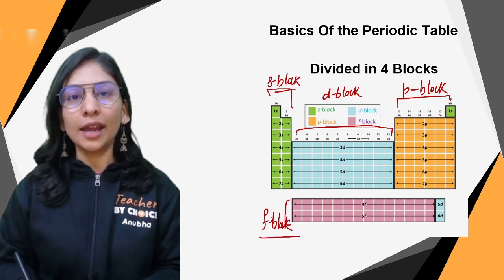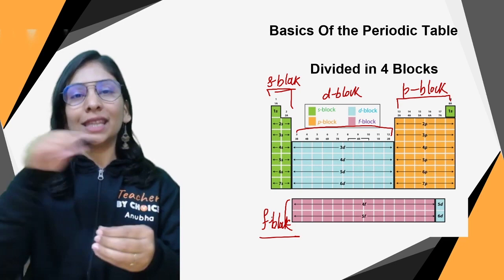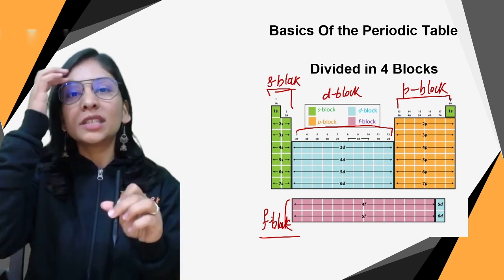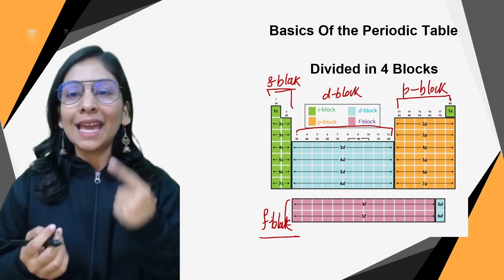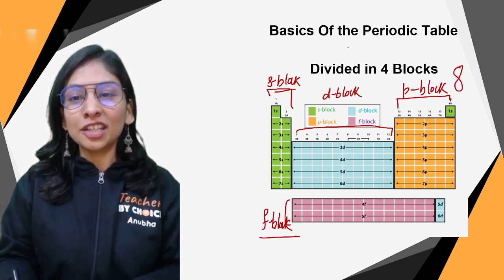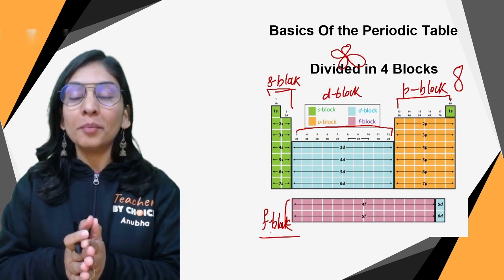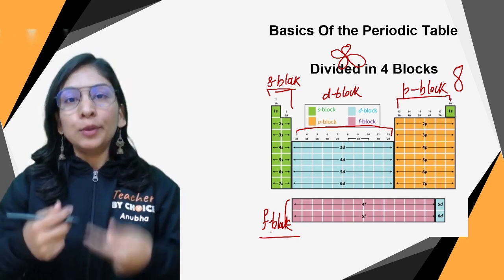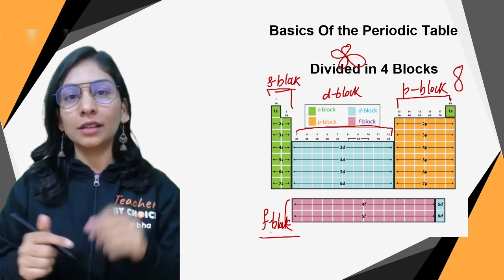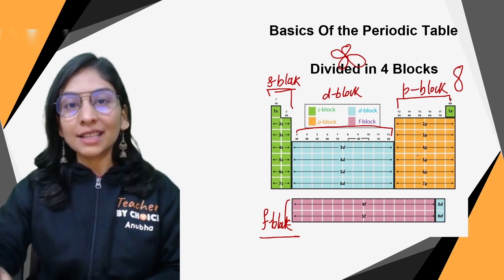These blocks correspond to types of orbitals. In 11th class atomic structure, you'll learn that electrons in orbits occupy four types of orbitals: s is spherical; p is dumbbell-shaped; d is like two attached dumbbells; and f is a diffuse shape — quite complex to draw. When an element belongs to the s-block, the last electron is in the spherical s-orbital, and similarly for p, d, and f.